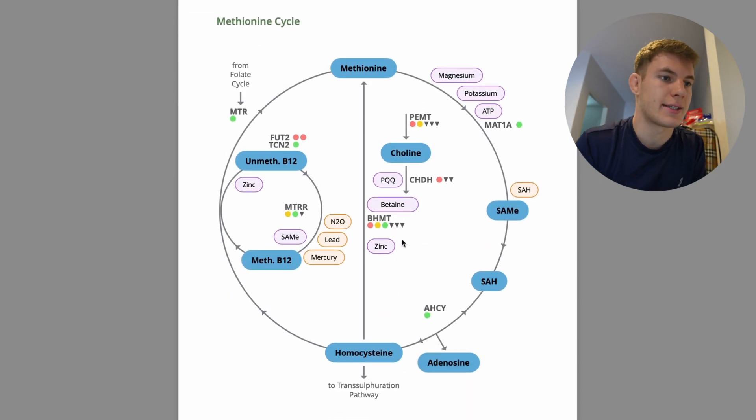Next one, the methionine cycle. I've got a little bit more problems with this one. First off, you can see here, we've got the PEMPT. We've got the CHDH. And we've got the BHMT. And we've got the FUT2. They're my problems with this cycle. Let's start with the PEMPT and the CHDH.